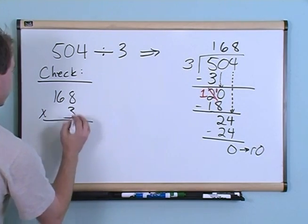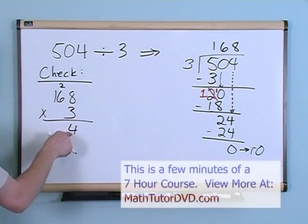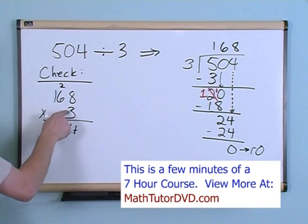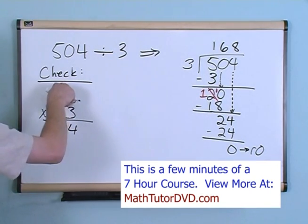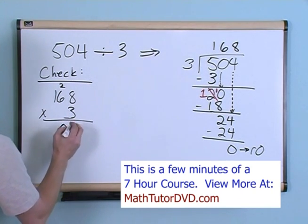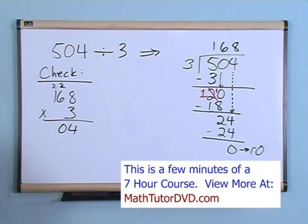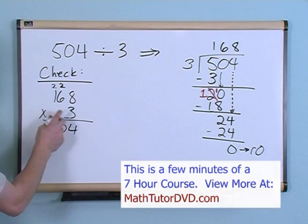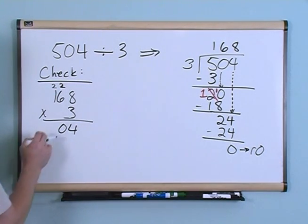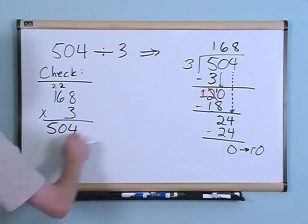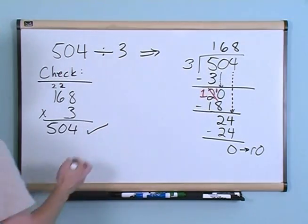Let's multiply here. 8 times 3 is 24. So I'm going to put my 4 here and my 2 up here. Now, 6 times 3 is 18, plus the 2 I just wrote here gives me 20. So I'm going to put the 0 there and the 2 up there. 1 times 3 gives me 3, plus 2 more give me 5. 504 checks with 504. So I have checked the answer.